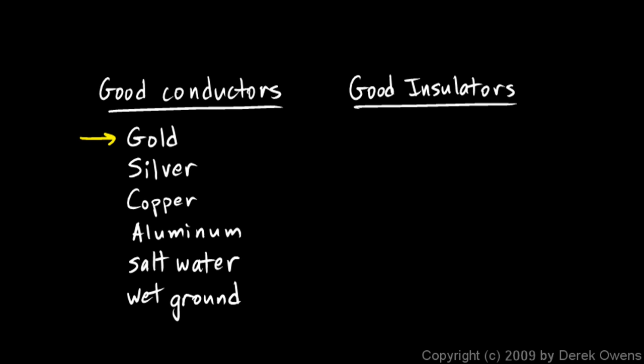One interesting story about gold as a conductor here: when they were working on the Manhattan Project, this was when they were designing and constructing the first nuclear weapon in World War II, a very secret project, they were doing a lot of advanced physics research and experimentation along with the project.